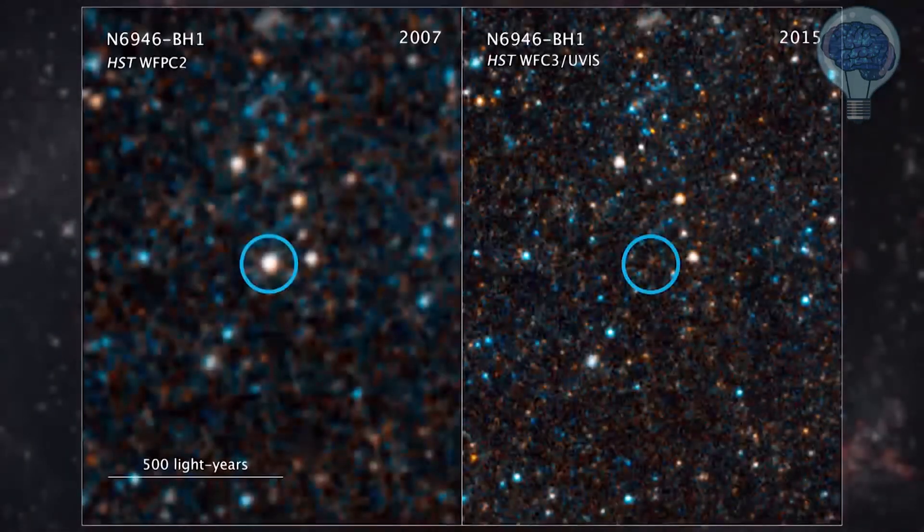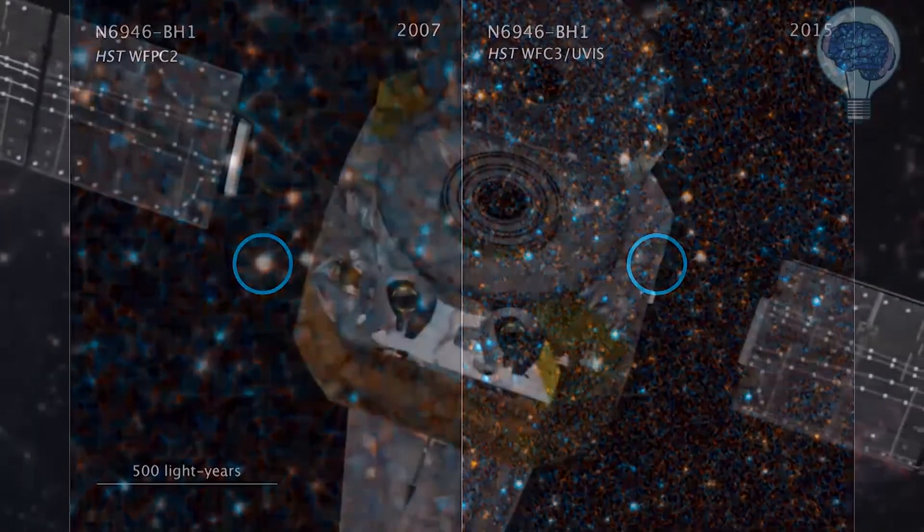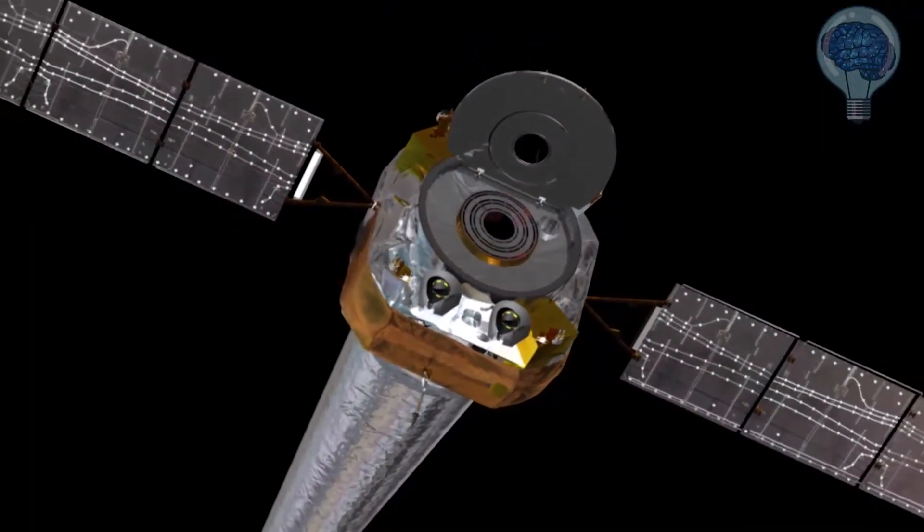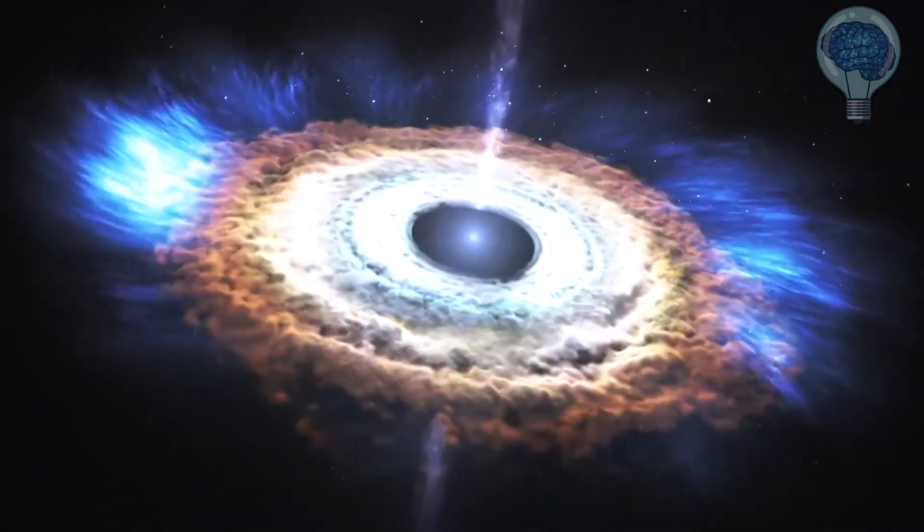To help confirm that the star is now a black hole, the team plans to analyze observations taken with the Chandra X-ray Observatory, which would be able to reveal X-rays being emitted by the gas falling into the black hole.